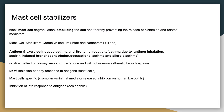Coming to mast cell stabilizers. Mast cell stabilizers block mast cell degranulation, stabilizing the cell and thereby preventing the release of histamine and related mediators, such as cromolyn and nedocromil. When asthma is antigen- or exercise-induced, with increased bronchial reactivity due to antigen inhalation, or due to drugs such as aspirin, or occupational asthma, or allergic asthma in hay fever and rhinitis, or due to occupational causes like wood dust and soldering fluxes — all of which cause inflammation thereby causing asthma — that is where we use mast cell stabilizers.